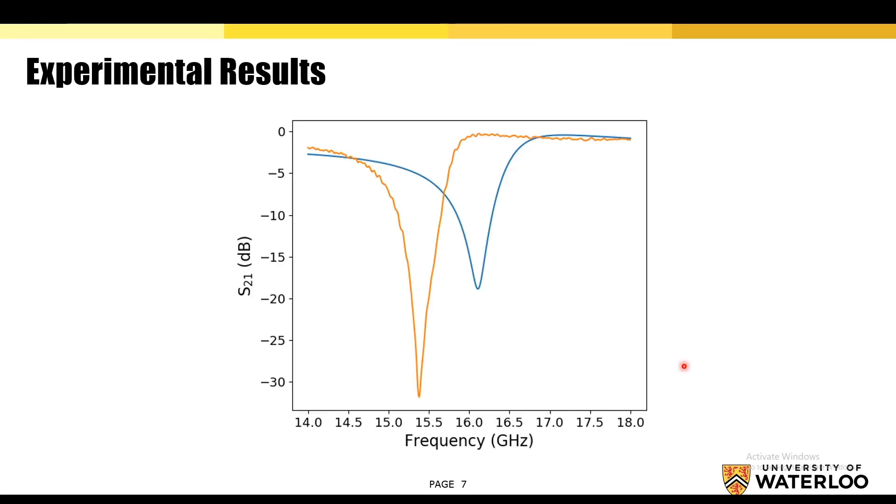After the promising simulation results, we then fabricated some resonators to characterize them. And so we can see a blue trace, which is the simulated trace and the orange trace that was the measured trace, showing qualitatively that the resonators are behaving as we expect them to.